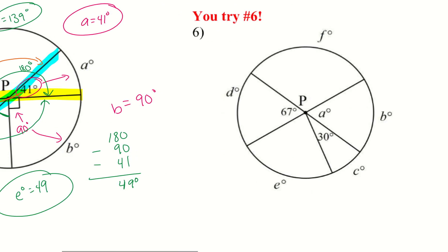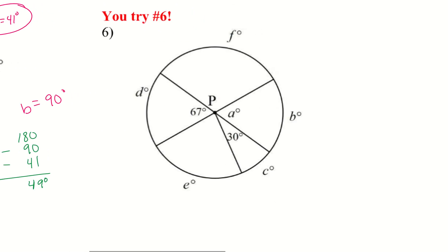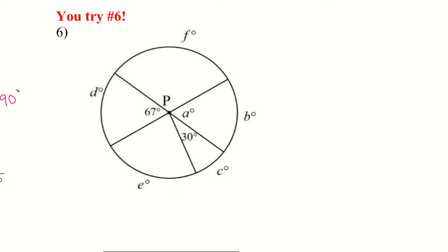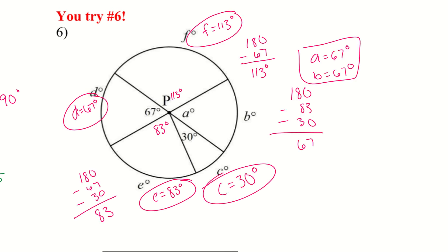I want you to go ahead and try number six — it's another one with a bunch of different pieces to find. Here's number six finished up. We have all the different parts; a lot of the subtraction is coming from 180 degrees because I'm taking those straight lines and using that to help.